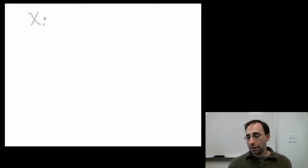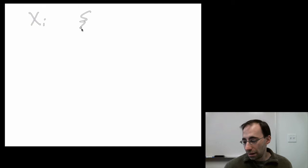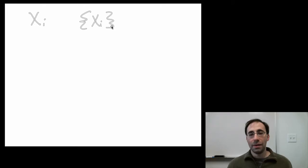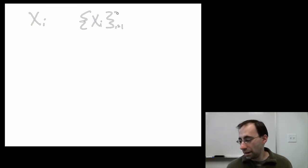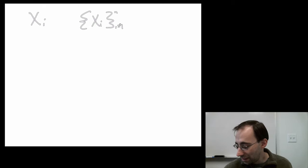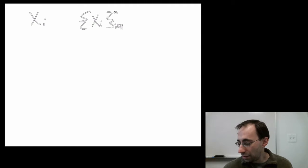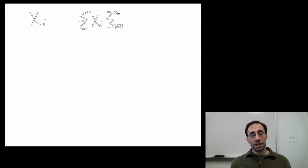If I want to represent a sequence, I can take curly braces — curly brackets — around x sub i. That represents a sequence. Sometimes you see an n there instead. This is a sequence indexed by i. Sometimes when you want to be really explicit, you might see notation on the side indicating i equals 1 to n, meaning the sequence starts at i equals 1 and ends at i equals n.